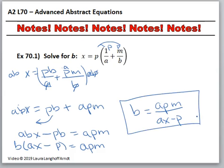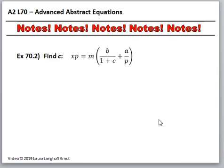You'll notice in the book, sometimes they have things in a different order. They might call the numerator APM, or it might be PAM, or MAP instead. Or the X and the A could be in a different order — and it doesn't really matter. It's all the same, it's all good, you are still right. Okay, let's do the next one.